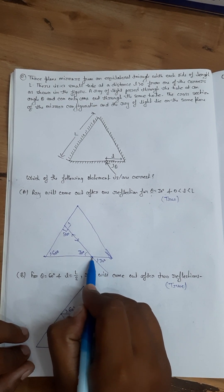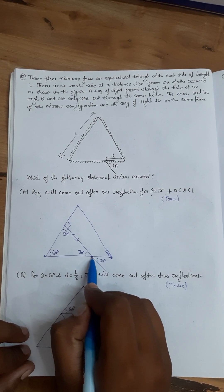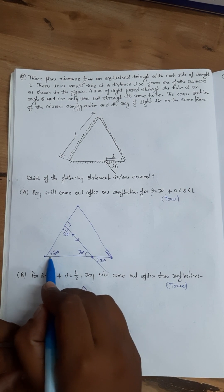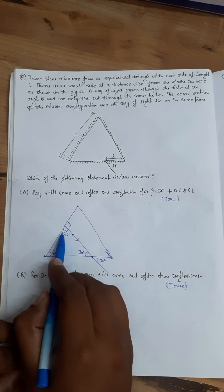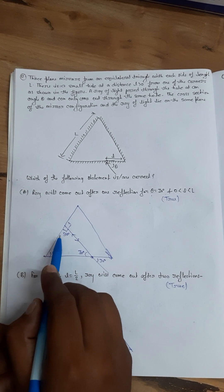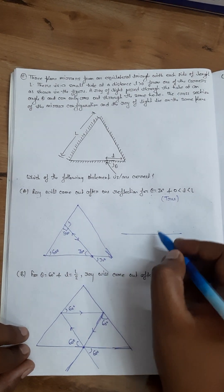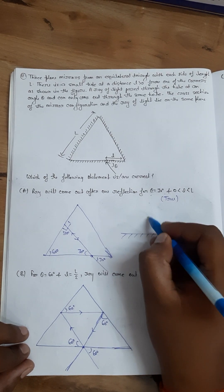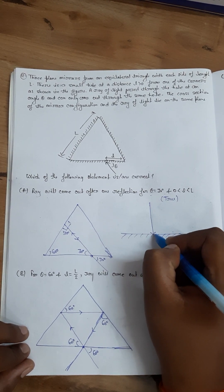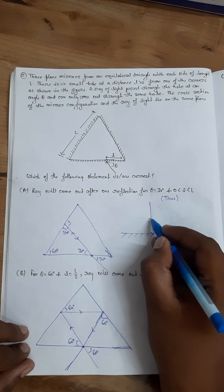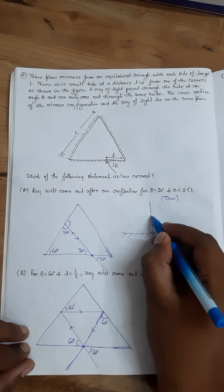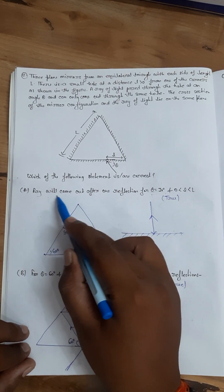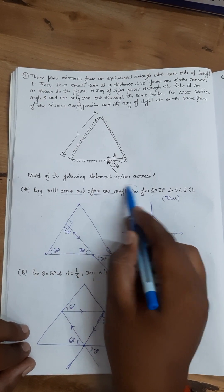If this angle is 30 degrees, then this angle is 30 degrees, this angle is 60 degrees. Friends, this angle works out to 90 degrees — and the angle is 90 degrees. This angle is 90 degrees, and the light will come out after one reflection.